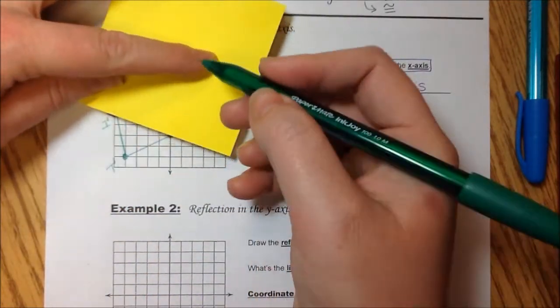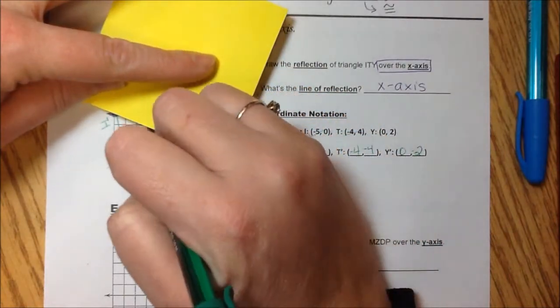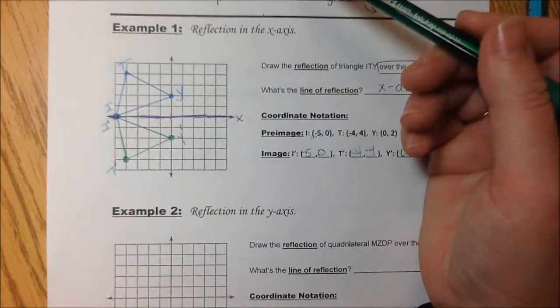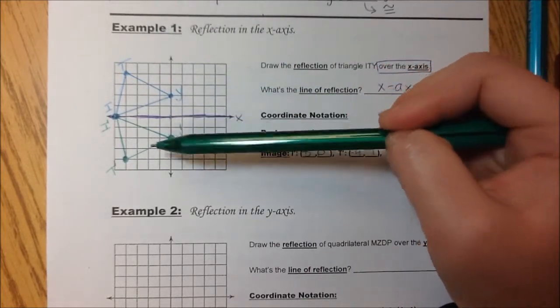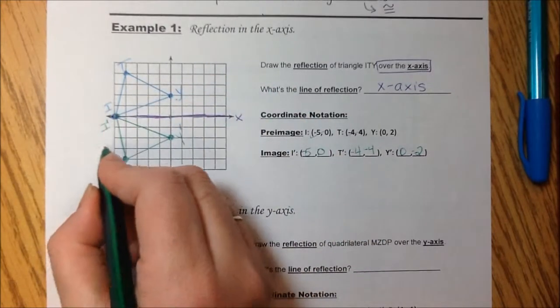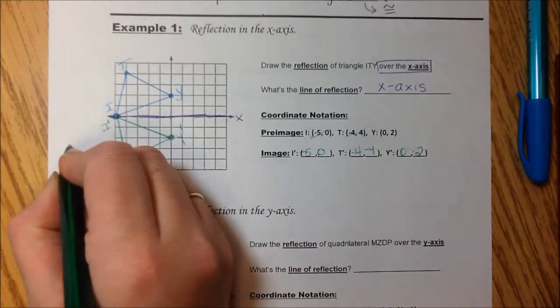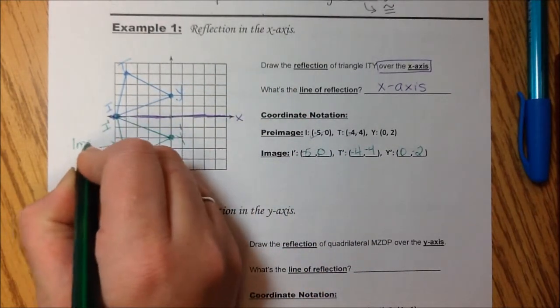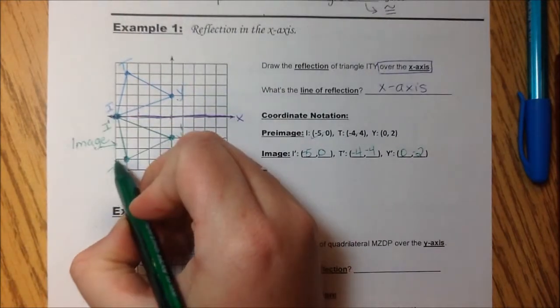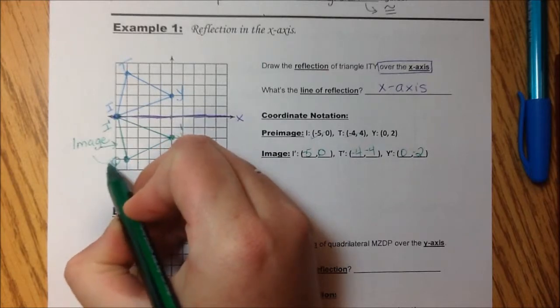Now, before you move on, you want to look at your figures and make sure that they are still congruent. Does this look like that? Absolutely. Does it look like we just flipped this over that line? And so this, let's label them so we remember, is our image. Because it's after the transformation or the translation. And it has prime.